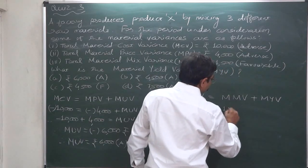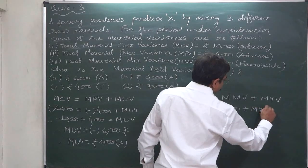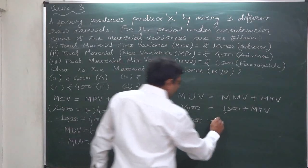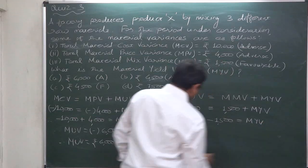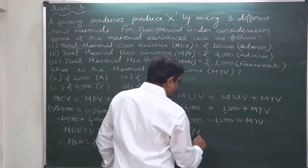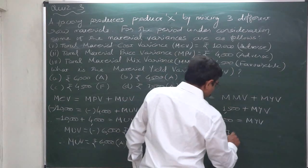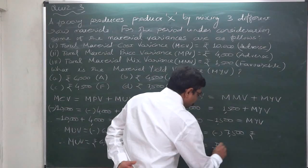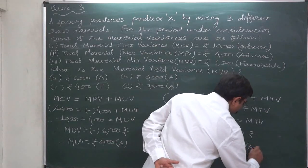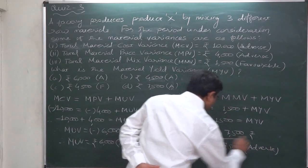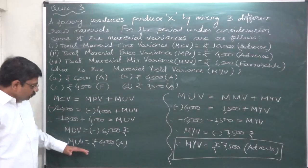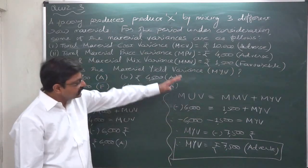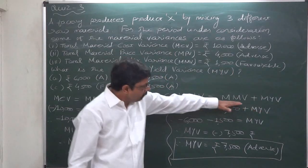We have material usage variance as adverse 6,000, that is minus 6,000. Material mix variance is given as 1,500 favorable, that is positive 1,500. So: minus 6,000 equals positive 1,500 plus material yield variance. Therefore, material yield variance equals minus 6,000 minus 1,500, which comes to minus 7,500. So material yield variance is rupees 7,500 adverse — answer D.